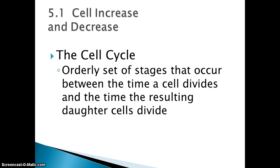The cell cycle is just the orderly set of stages that occur between the time a cell divides and the time the resulting daughter cells divide. The cell cycle includes all of interphase — which is G1, S, and G2 — and mitosis and cytokinesis. That's the entire cell cycle.